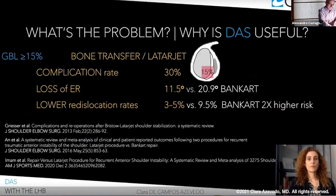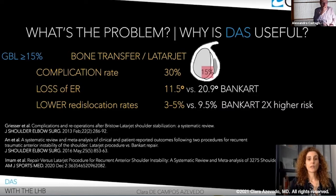We have bony transfer procedures and the Latarjet procedure. However, in subcritical glenoid bone loss, the complication rate of these procedures may be unacceptable, ranging around 30%. This procedure, as well as the Bankart procedure, does lead to a loss of external rotation, even though it's lower, and there is a reduced dislocation rate, despite Bankart producing a two times higher risk than the Latarjet.